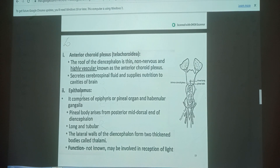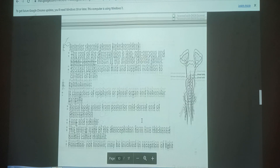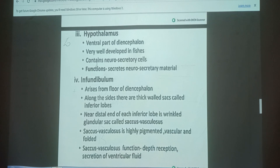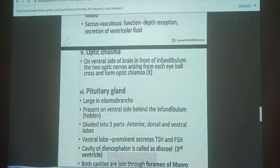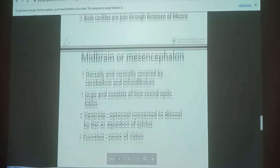In detailed study, the diencephalon also has anterior and posterior flexures. The Epithalamus is mainly involved in reception of light. The Hypothalamus is the ventral part of the diencephalon, very well developed in fishes, and contains neurosecretory cells - its function is to secrete neurosecretory material. The Infundibulum is also a part of the diencephalon. The Pituitary Gland is the smallest gland in our body structure, lodged in the elastomal branches, and has anterior and posterior pituitary regions.